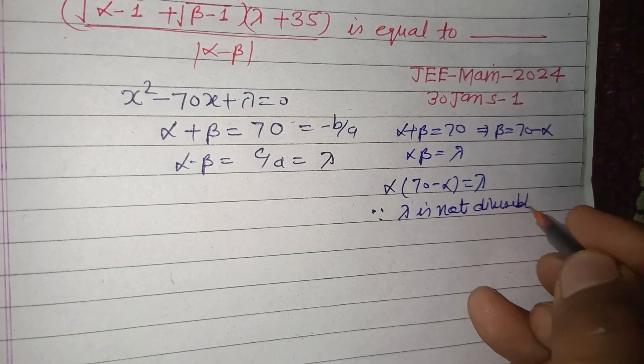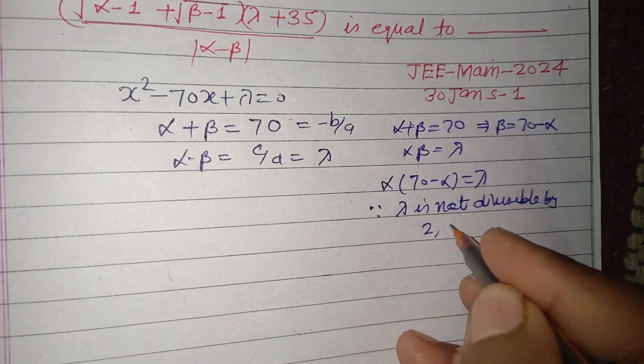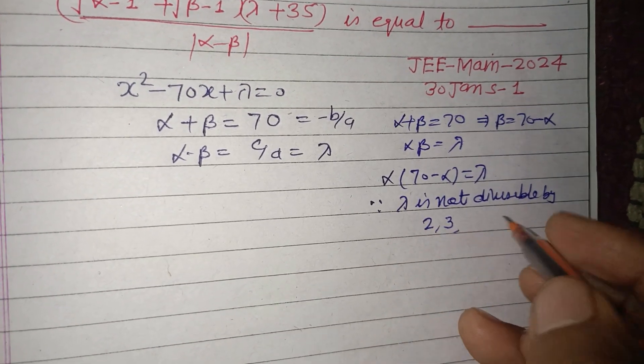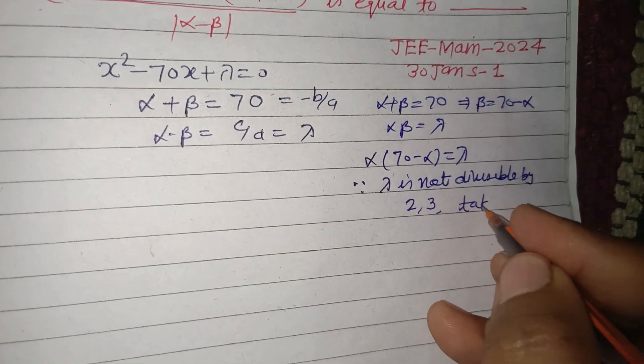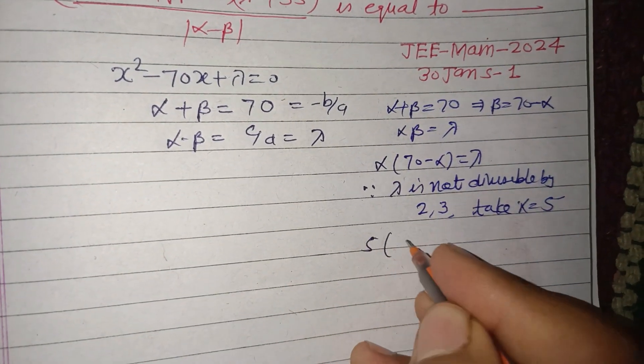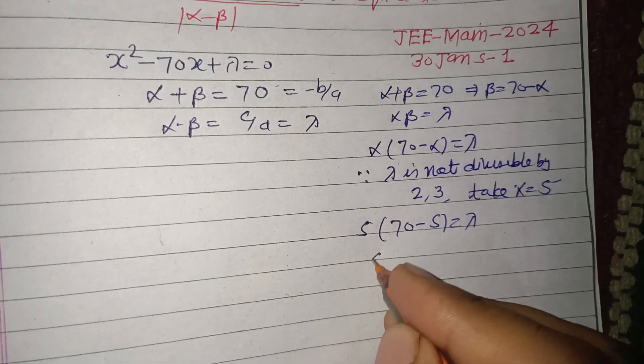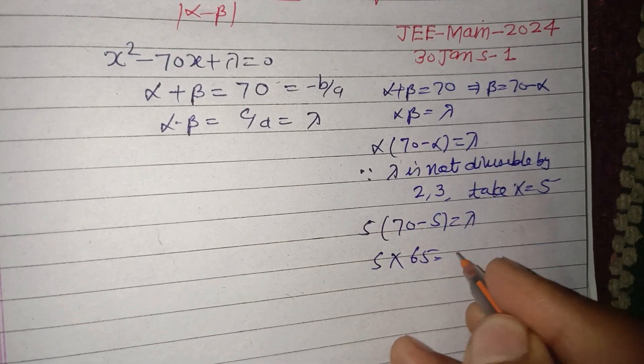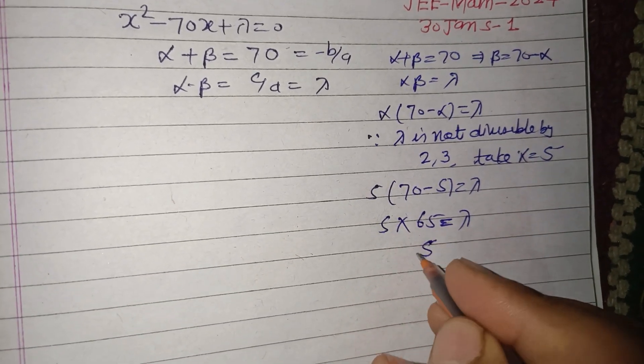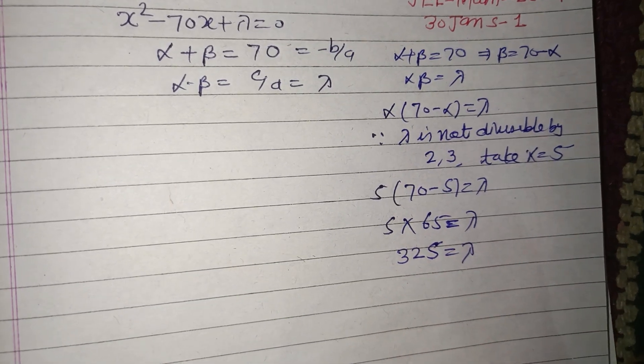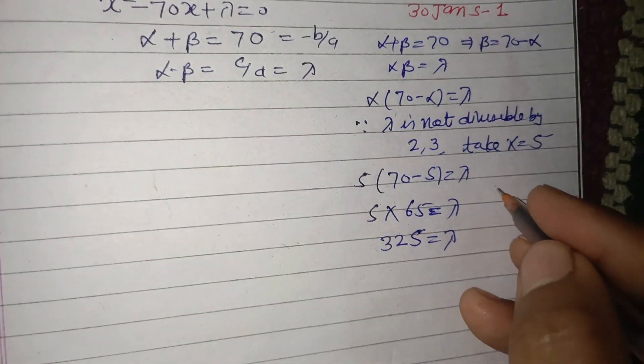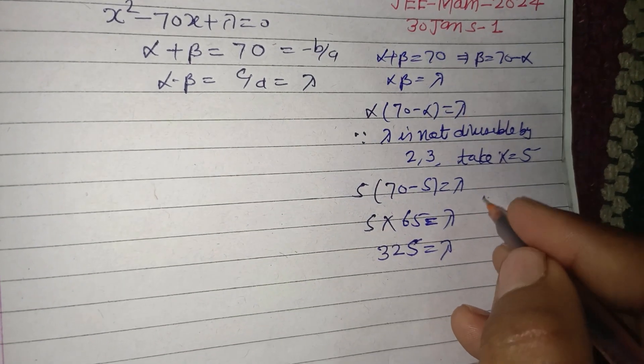Putting 5 into 70 - 5 equals lambda, so 5 × 65 = λ. This gives us 5 × 5 = 25, 5 × 6 = 30, so 325 = λ.